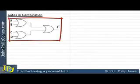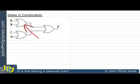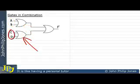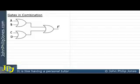This is an example of a combinational logic circuit that actually has three OR gates. This OR gate has inputs A and B, this one has inputs C and D. When we're using gates in combination, it's important to be able to derive the boolean representation for the output F. We will achieve that by looking at the output of each gate in turn.